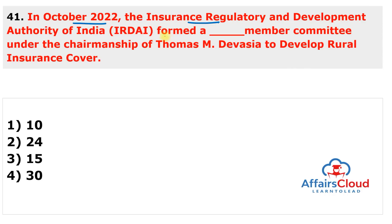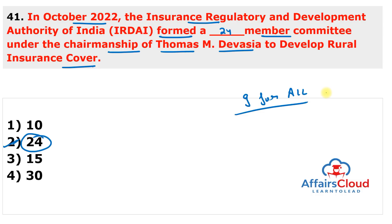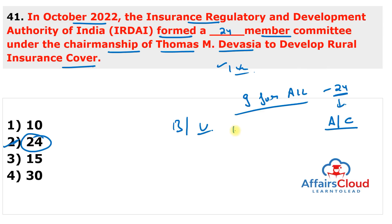Next question: in October 2022, IRDAI formed a how-many-member committee under the chairmanship of Thomas M. Devasahayam to develop rural insurance cover? The answer is a 24-member committee. To achieve the objective of 'Insurance for All', IRDAI formed a 24-member committee to develop and suggest an affordable and comprehensive cover for the rural population. Thomas M. Devasahayam, an IRDAI member of the non-life area, will serve as chairman for one year. The committee will examine and recommend ways to enhance Bima Vahak, Bima Vistar, Bima Sugam, and digital platforms.